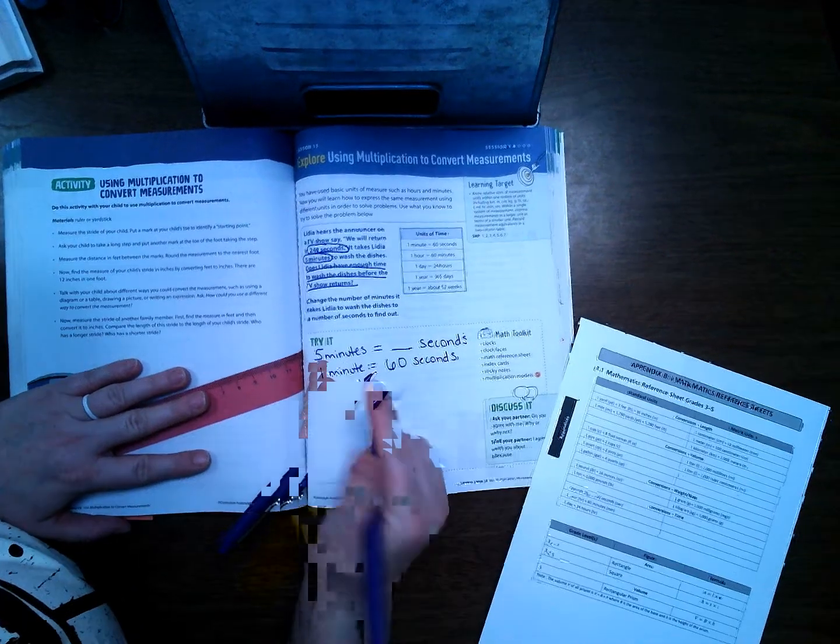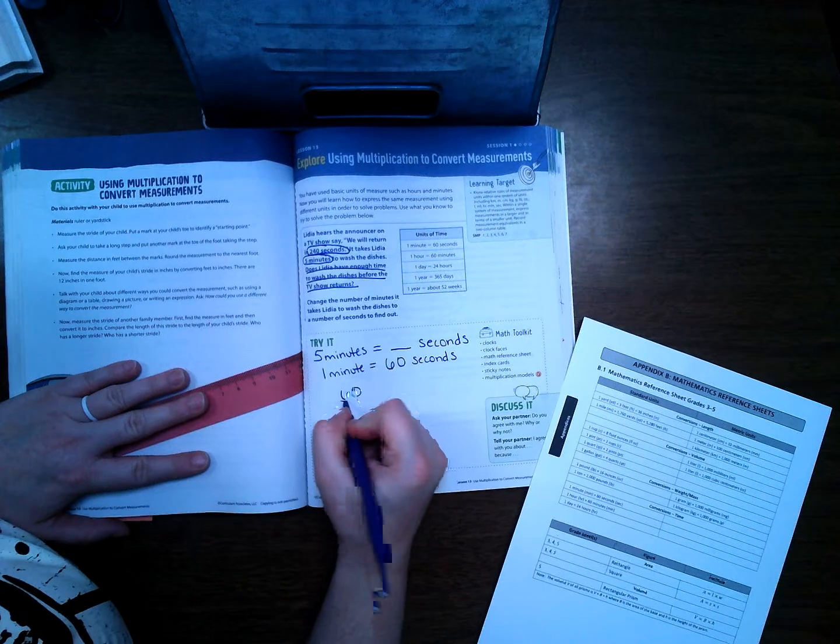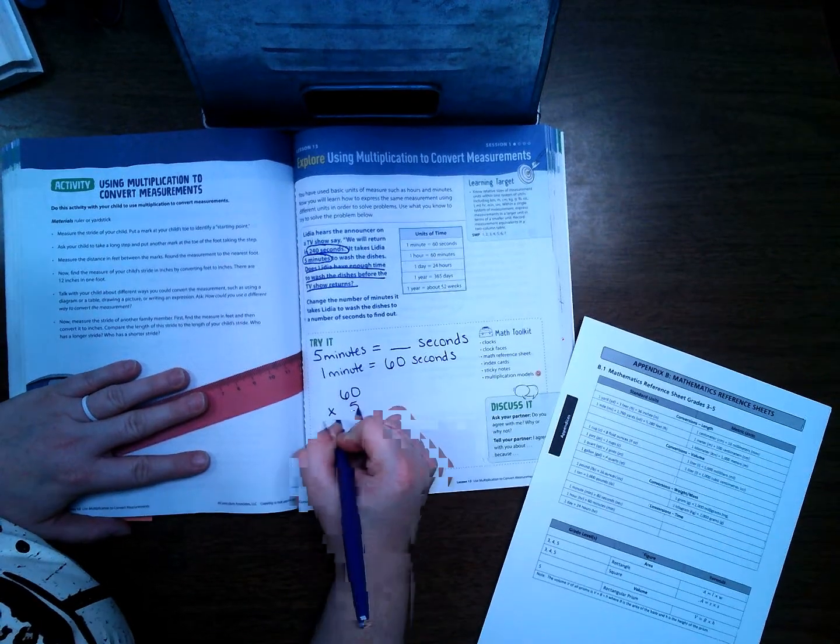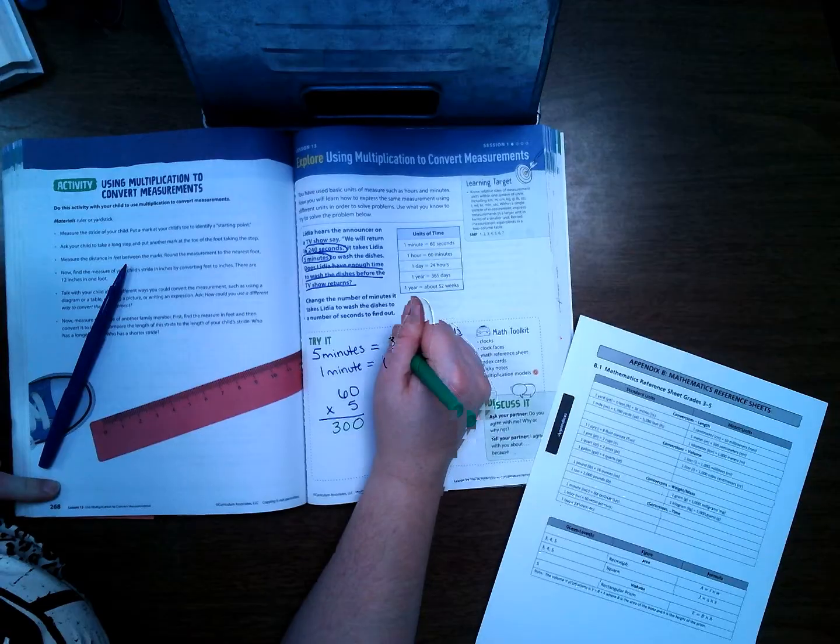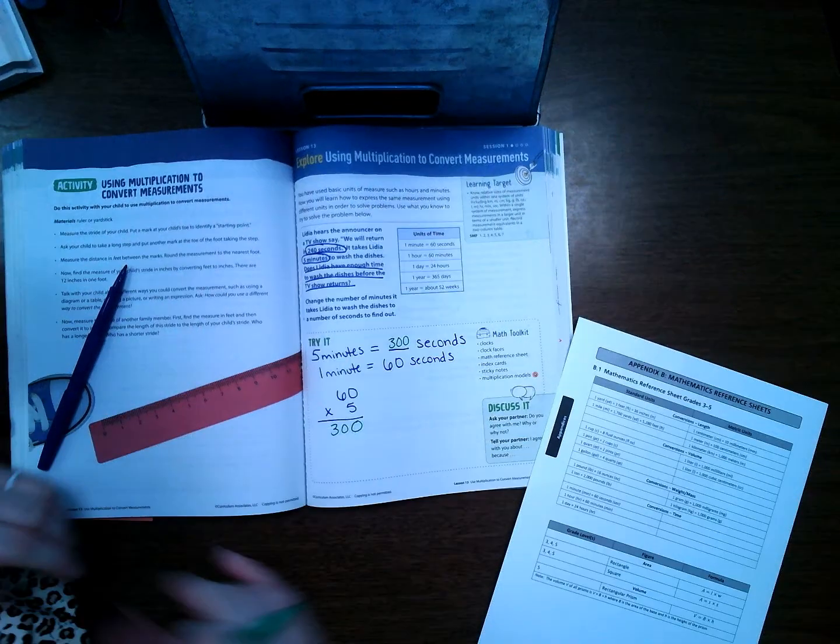But I have five minutes, so I'm going to do 60 times 5 to get my answer that goes right there. So 60 times 5, 5 times 0 is 0, 5 times 6 is 30. If you're not comfortable doing it this way, you can also draw a chart.